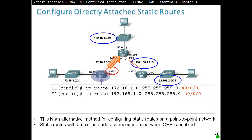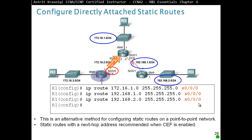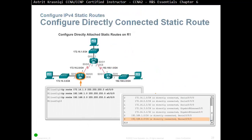This is an alternative method to configuring static routes on a point-to-point network — static routes with the next hop address are recommended with CEF enabled. To get to destination 172.x.x.0 with that mask, we go out of S0/0 — we exited our serial interface. The same approach applies for the second network and the third network: we go out of the serial interface. When we do 'show ip route', we should see our static routes in the routing table.